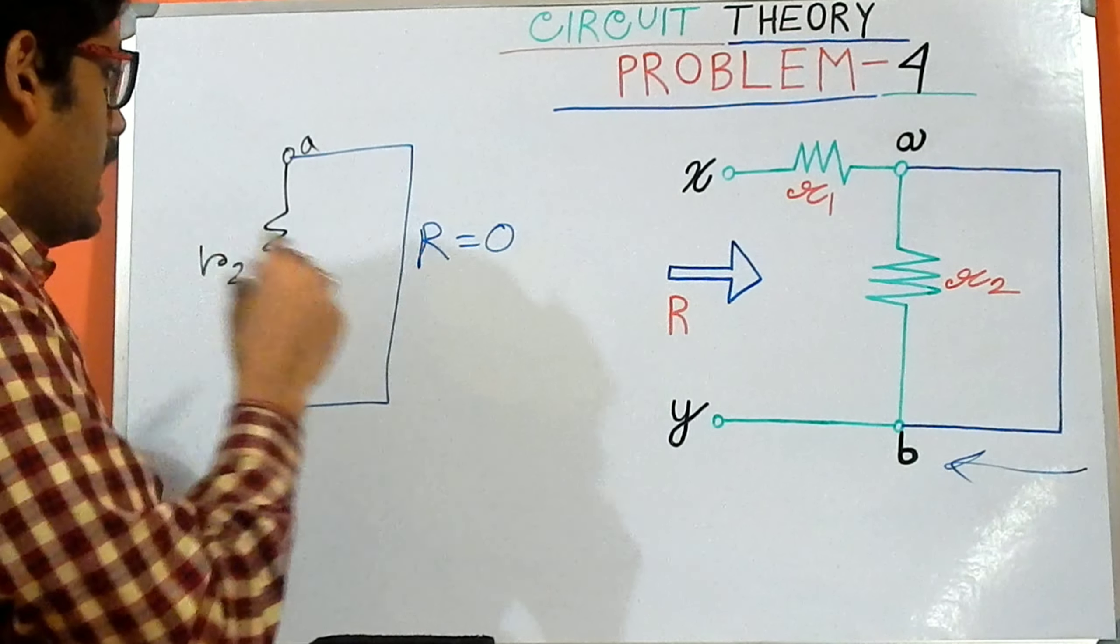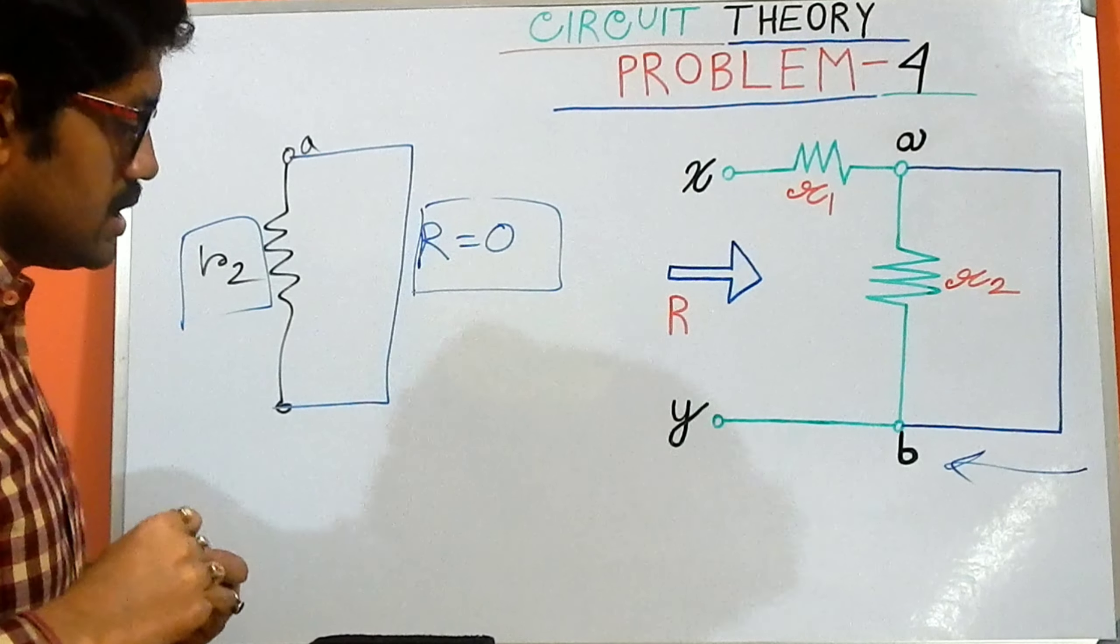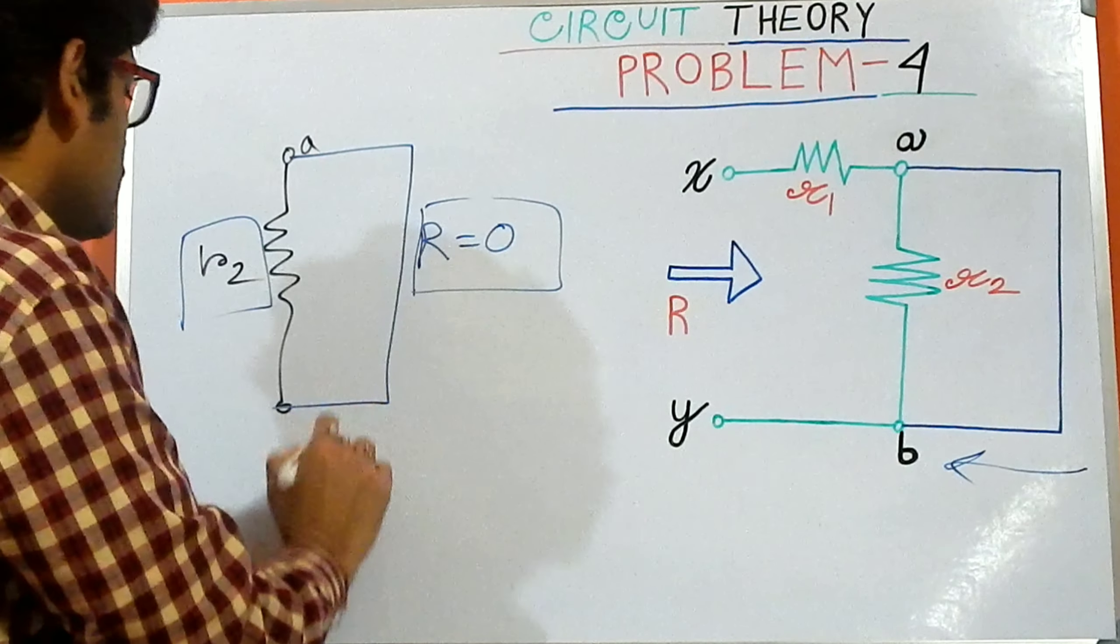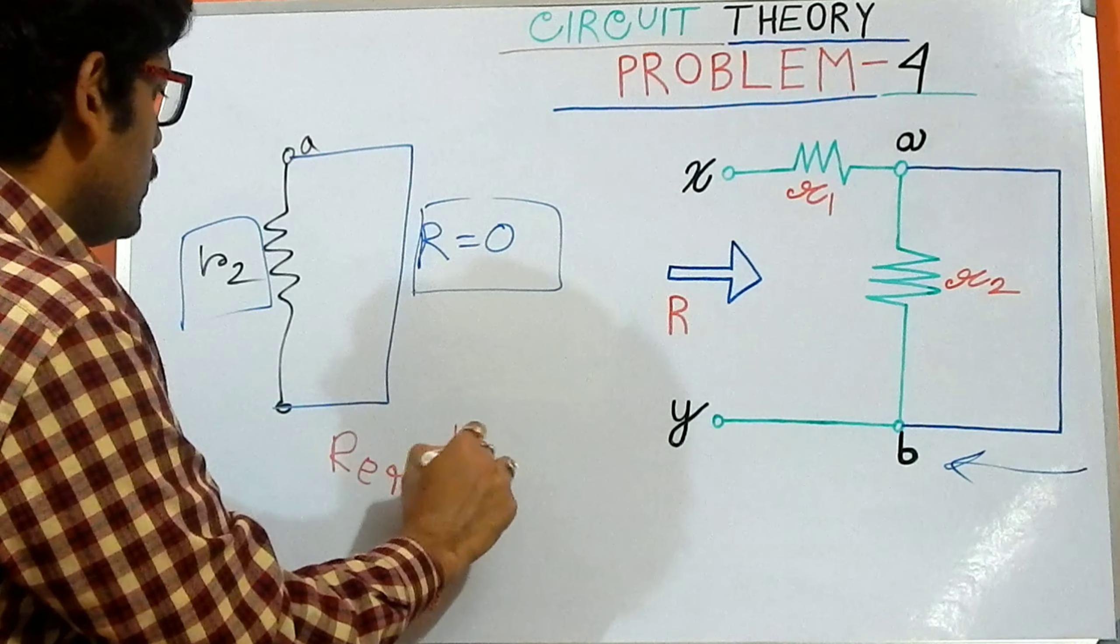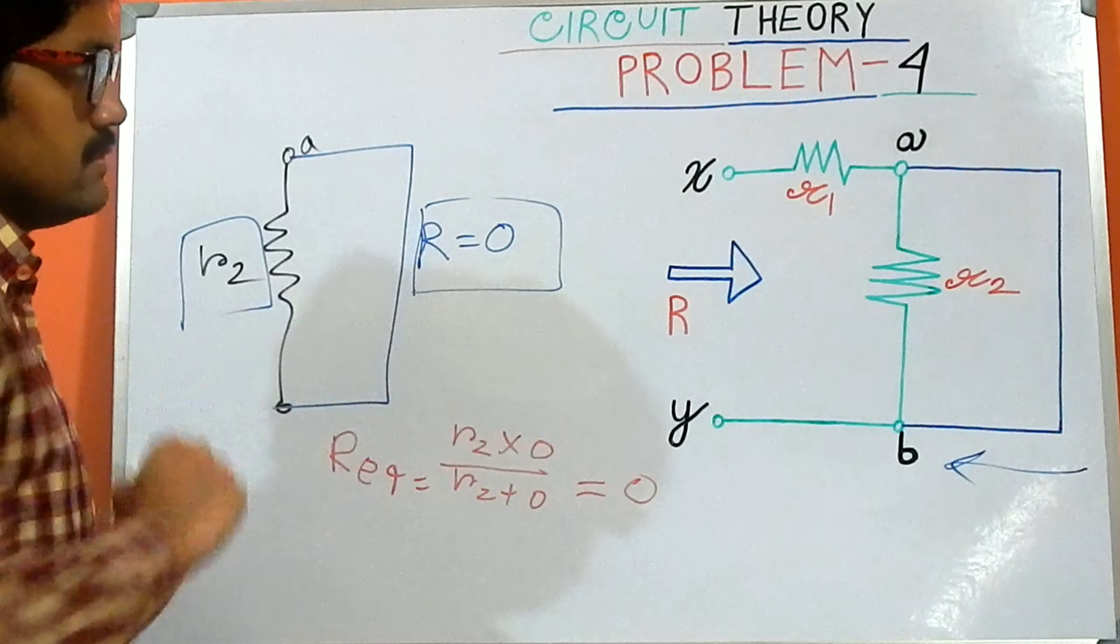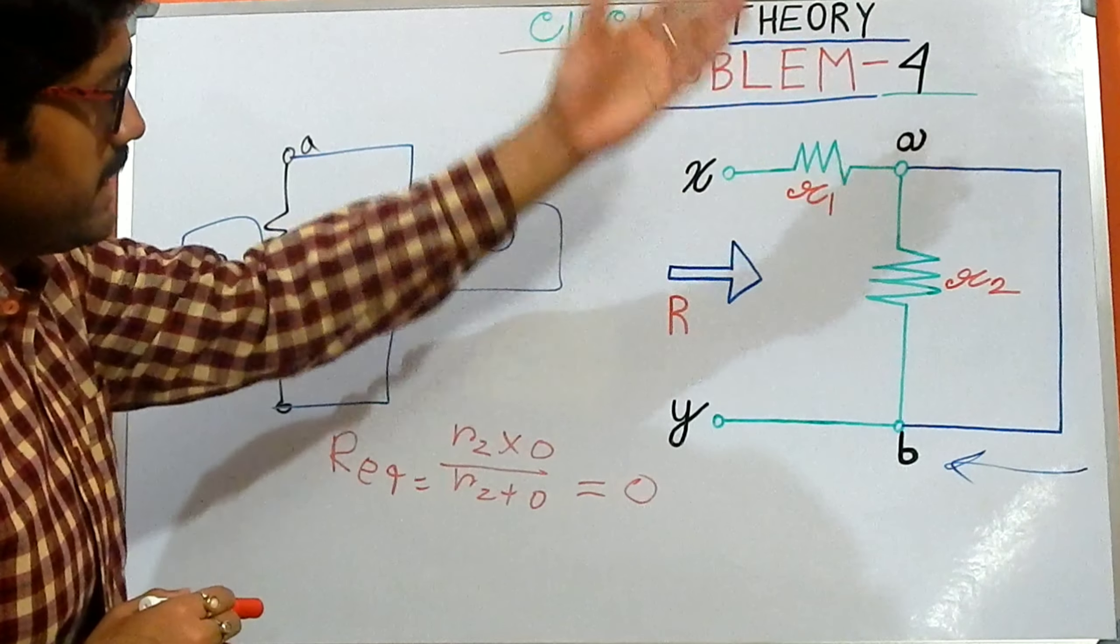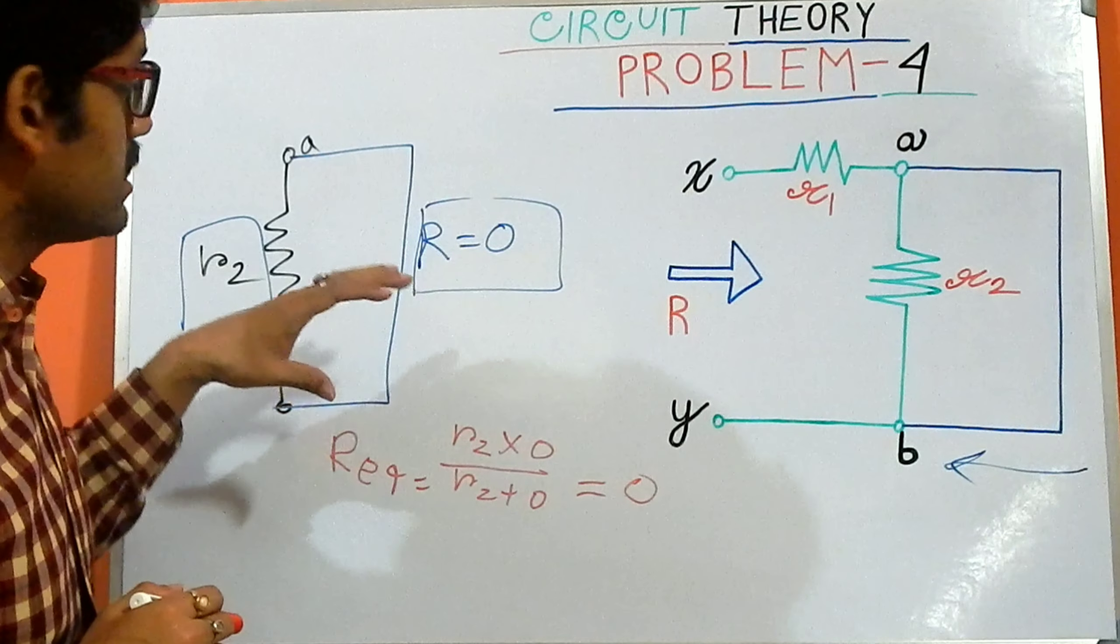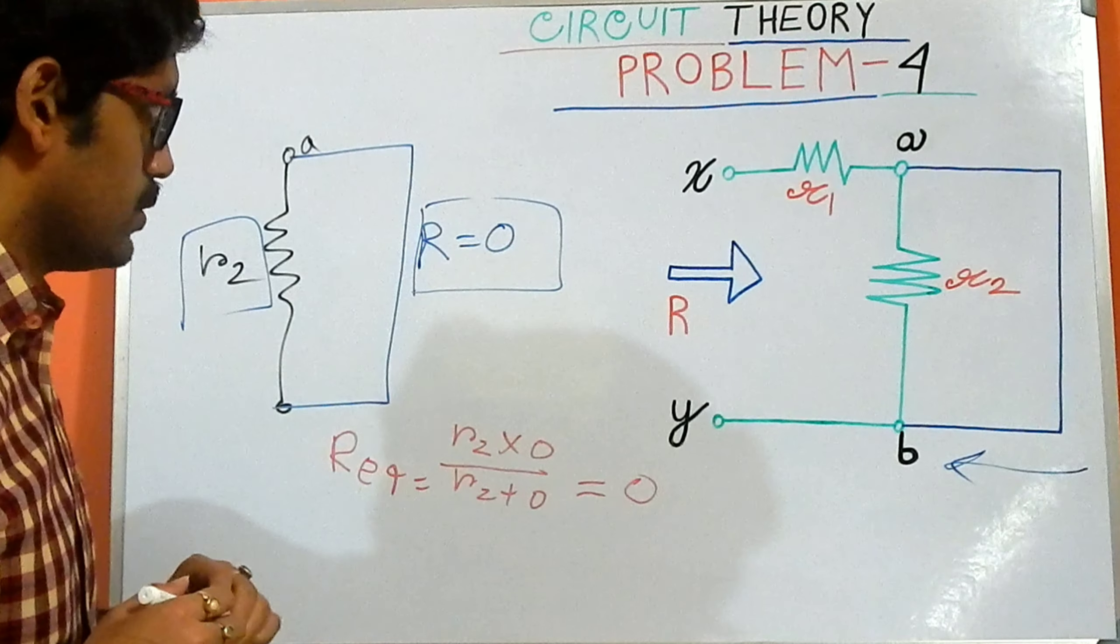Now these R and R2 are placed in parallel. What is the equivalent resistance for that? The equivalent resistance is R2 multiplied by 0 divided by R2 plus 0, which gives us 0. As R2 is placed with the short circuited path and the resistance of the short circuit path is 0, the equivalent resistance for this path is 0.